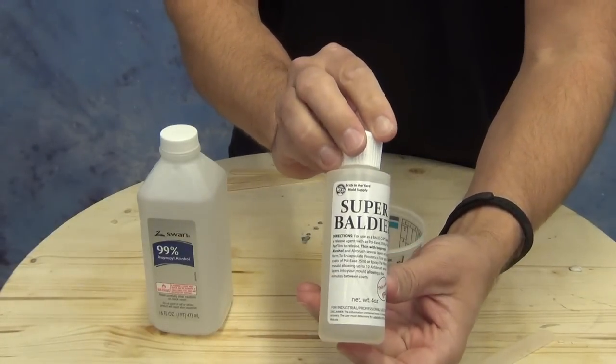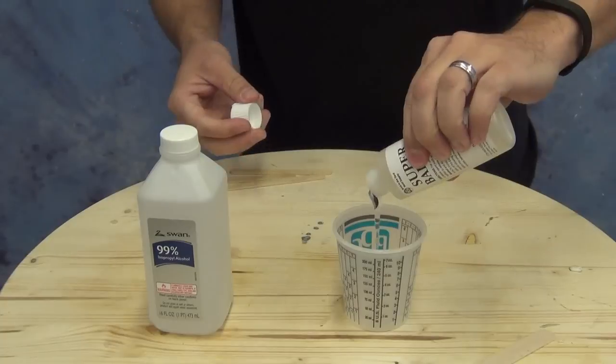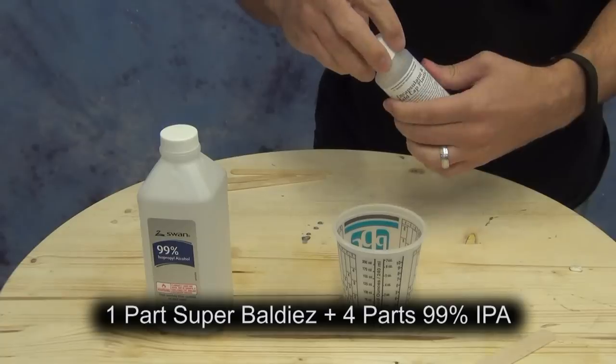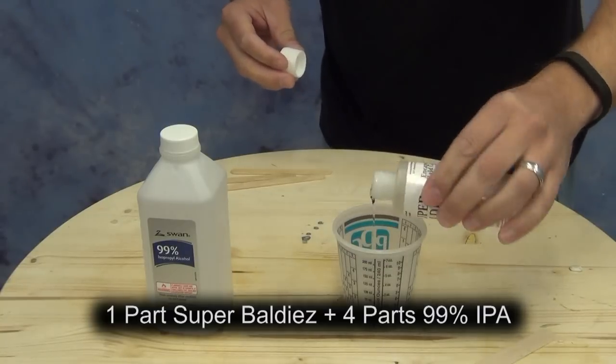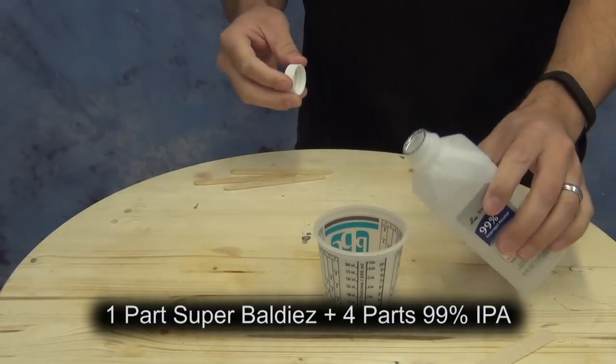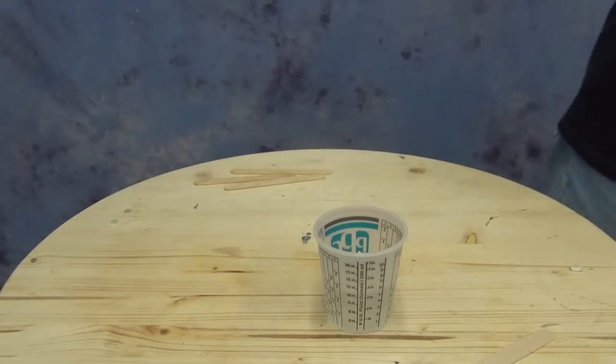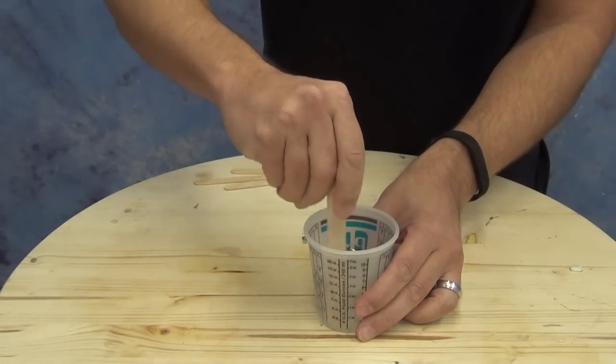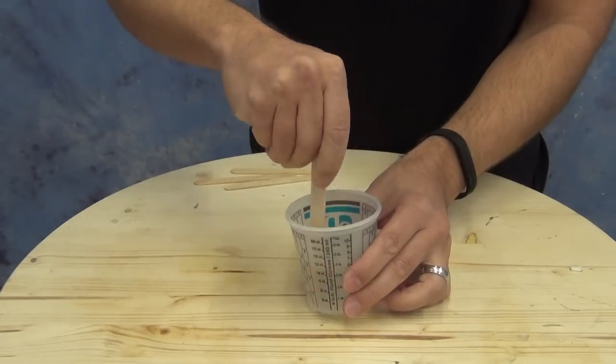For our encapsulator, we'll use Super Baldies cap plastic. Unlike regular Baldies, Super Baldies is alcohol-soluble and must be broken down with 99% alcohol—not 91 or 70%. Mix about one part Super Baldies to four to five parts 99% alcohol for airbrushing. Regular Baldies can also be used but breaks down with acetone versus alcohol. Stir the Super Baldies slowly to avoid splashing, which could throw off your ratio or waste material.